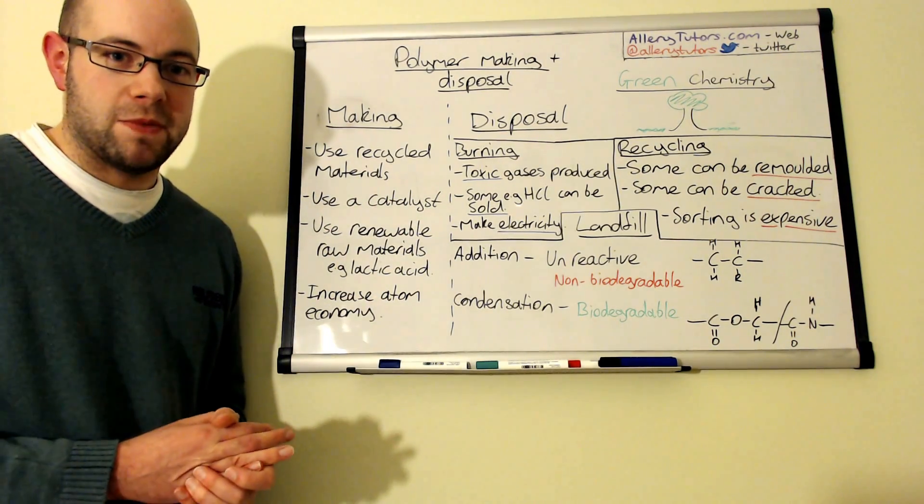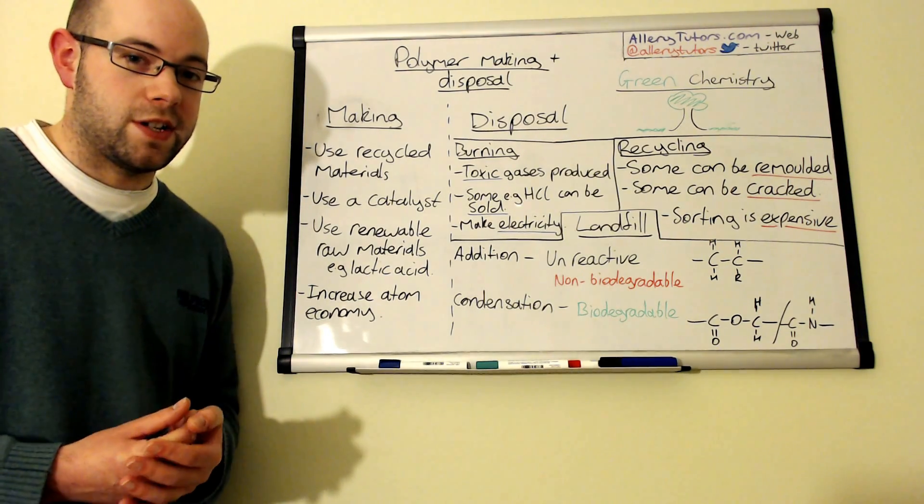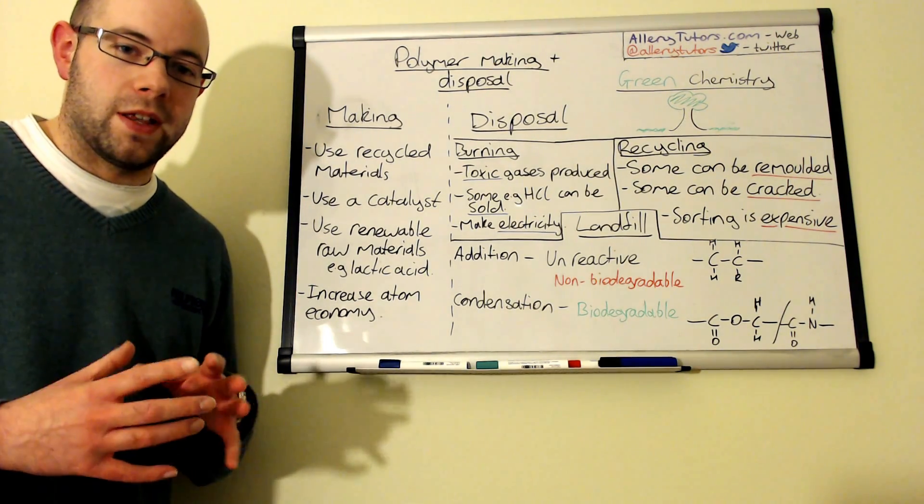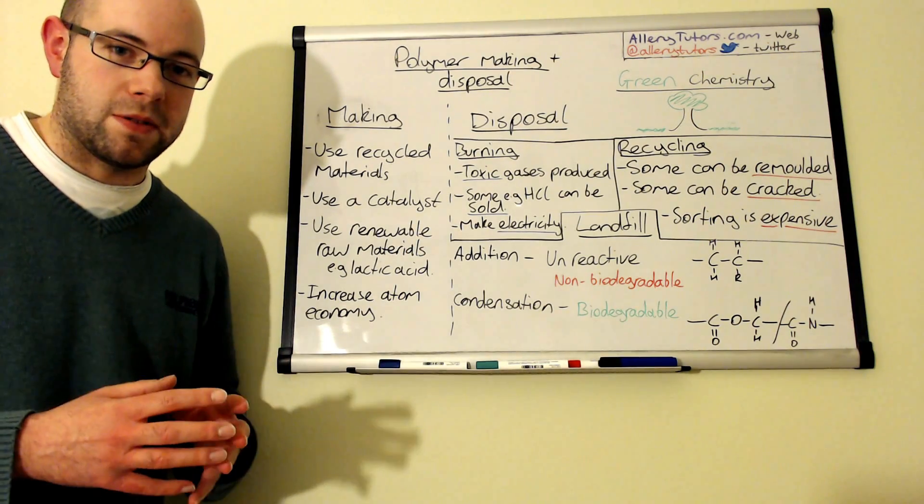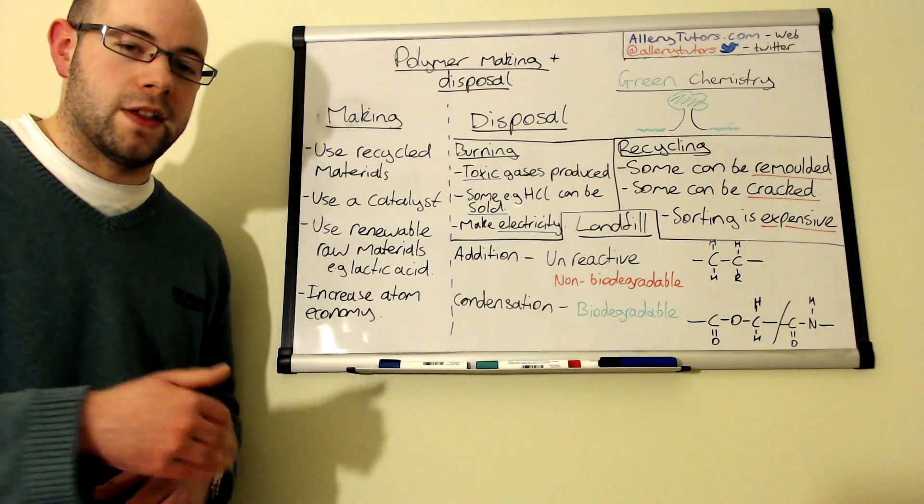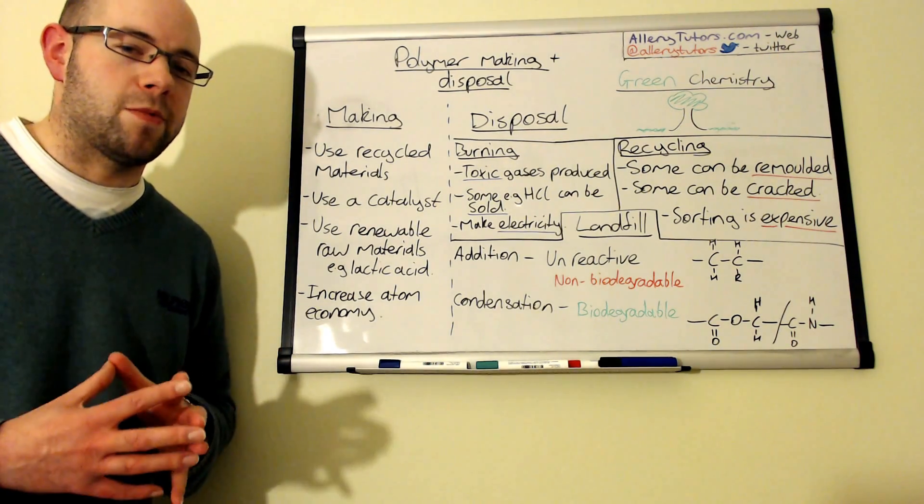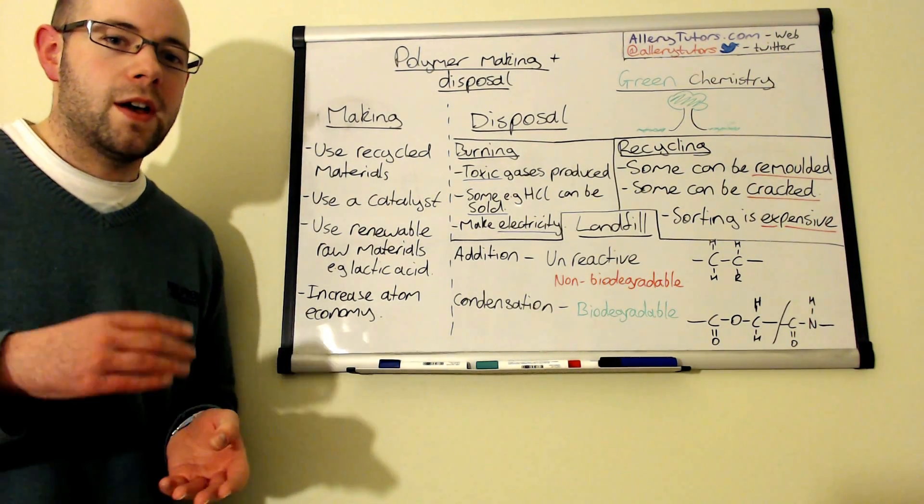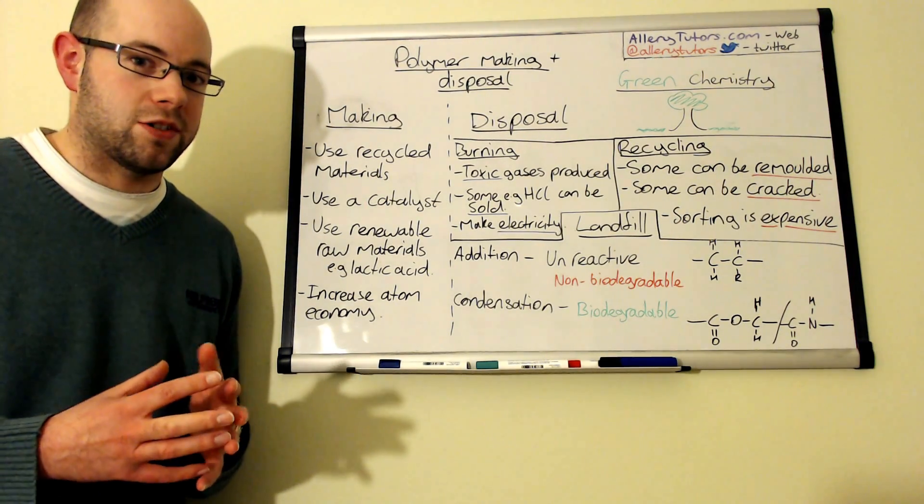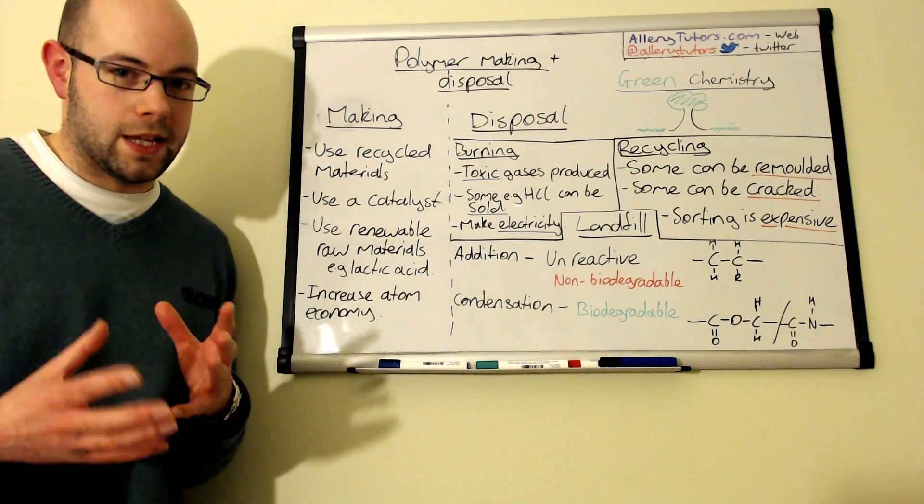By burning it we can actually make electricity. There's a lot of companies now that are starting to set up where they will take rubbish and certain types of rubbish and they will burn it, incinerate it, and heat water and then that steam can be used to generate electricity. So there is an environmental argument for burning as well, but obviously only certain types of rubbish can be burnt and it's very difficult to make use of the toxic gases that some plastics produce.